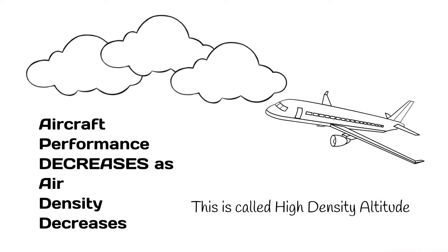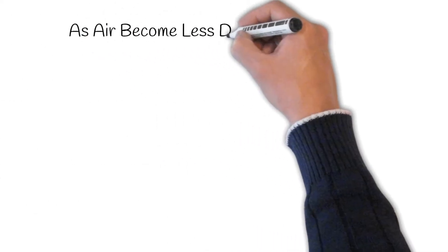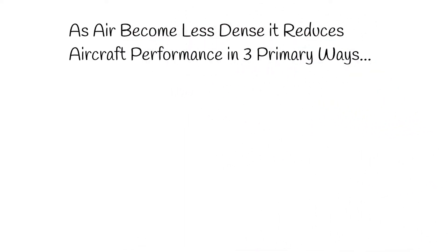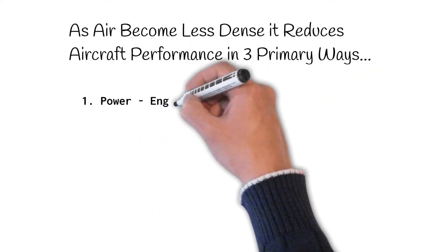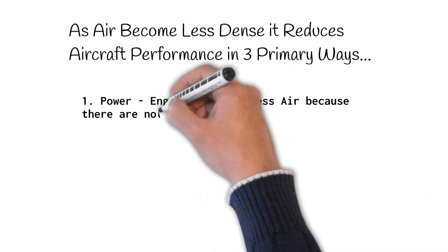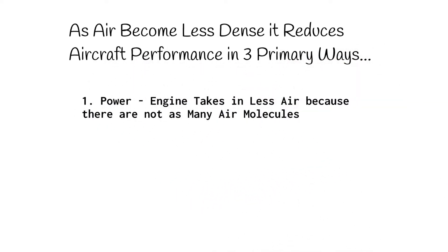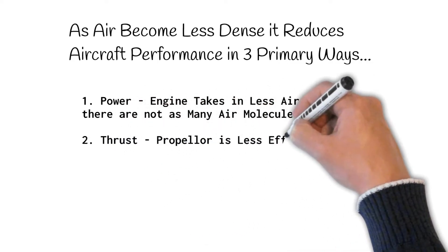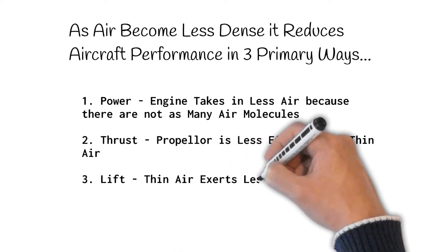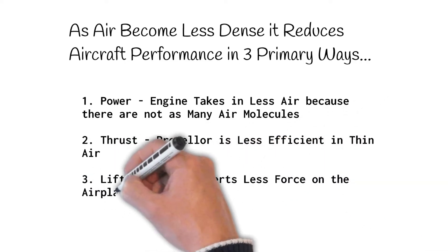As air density decreases, it affects aircraft performance in three ways. Number one, power is reduced because the engine takes in less air. Two, thrust is reduced because the propeller is less efficient in thin air. Number three, lift is reduced because the decrease in air molecules exerts less force on the airplane.